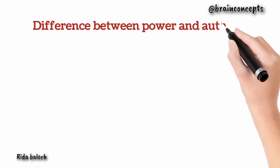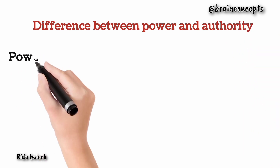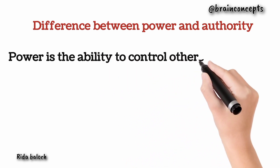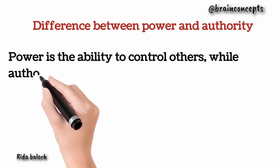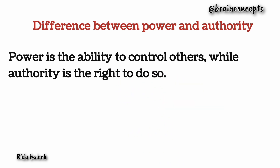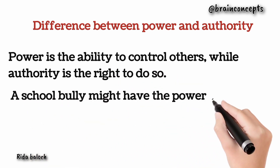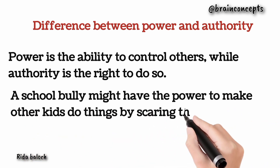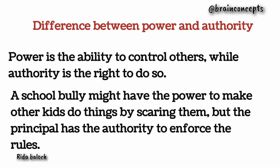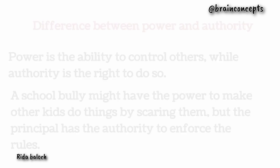Even though they are related, they are not the same thing. The first point is that power is the ability to control others while authority is the right to do so. For example, a school bully might have the power to make other kids do things by scaring them, but the principal has the authority to enforce the rules.